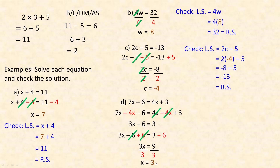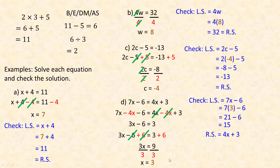The check for Example D looks a little different because there are expressions on both sides. Substitute 3 for x on the left: 7 times 3 minus 6 is 21 minus 6 equals 15. Substitute 3 for x on the right: 4 times 3 plus 3 is 12 plus 3 equals 15. Both sides give the same value — 15 — so that is the correct solution.